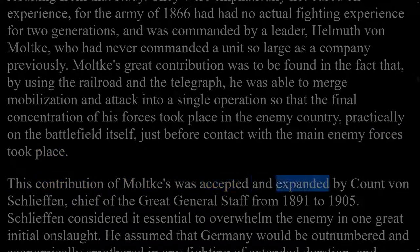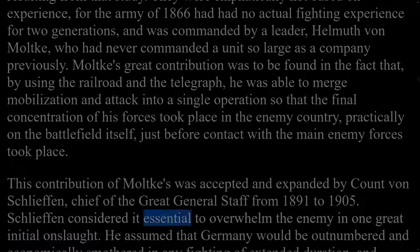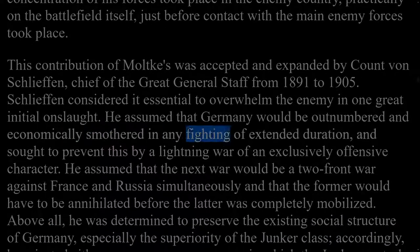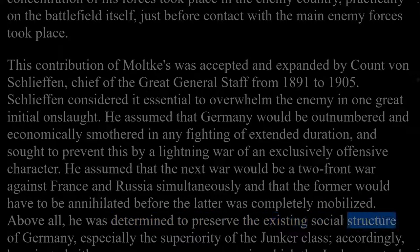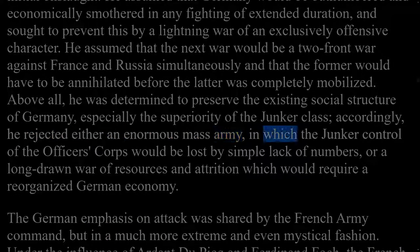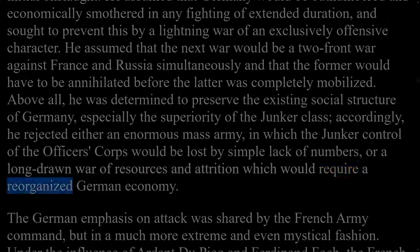Moltke's contribution was accepted and expanded by Count von Schlieffen, chief of the great general staff from 1891 to 1905. Schlieffen considered it essential to overwhelm the enemy in one great initial onslaught, assuming Germany would be outnumbered and economically smothered in any fighting of extended duration, and seeking to prevent this by a lightning war of exclusively offensive character. He assumed the next war would be a two-front war against France and Russia simultaneously, and that France would have to be annihilated before Russia was completely mobilized. Above all, he was determined to preserve the existing social structure of Germany, especially the superiority of the Junker class, and accordingly rejected either an enormous mass army or a long-drawn war of attrition which would require a reorganized German economy.